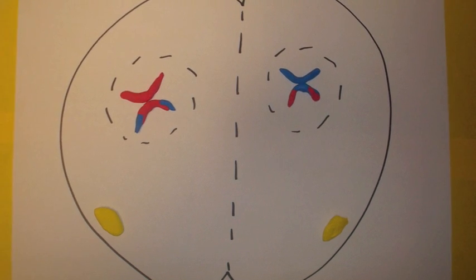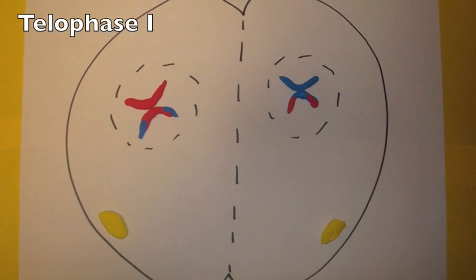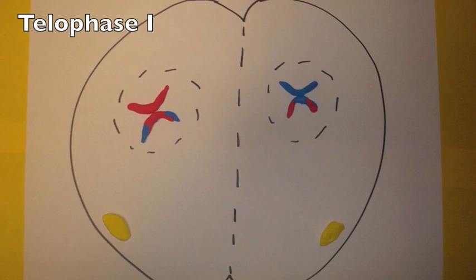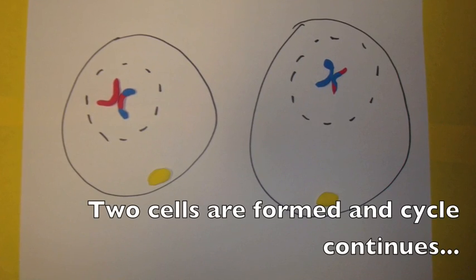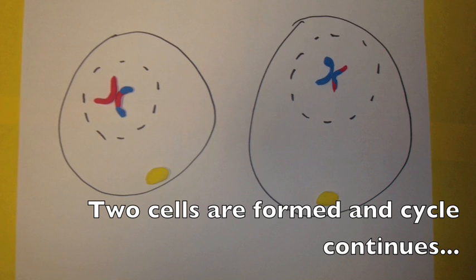Moving on to telophase I, chromosomes with two chromatids decondense and a nuclear envelope reforms around them. Each nucleus is now haploid. Two cells are formed and the cycle goes on.